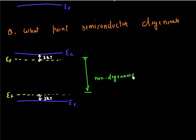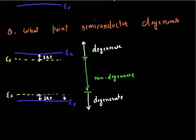When the Fermi level lies in the middle range, my semiconductor is non-degenerate. When it's either very close to the conduction band or inside the conduction band — or in the case of acceptors, very close to the valence band or inside the valence band — then I'll call my semiconductor degenerate. Also when I've added acceptors and my Fermi level is close to or inside the valence band, I also have degeneracy.